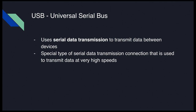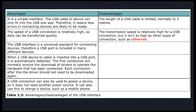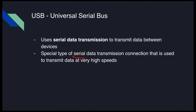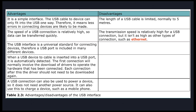USB stands for Universal Serial Bus. It uses a special type of serial data transmission that can transmit data at very high speeds. Advantages: it has a very simple interface, so it's easy to connect USB devices to computers; the speed is relatively high; it's universal — computers can immediately recognize a connected USB device; and USB connections can also power devices, so they don't need another power source. Disadvantages: the cable length is limited to five meters, and it's not as fast as Ethernet.